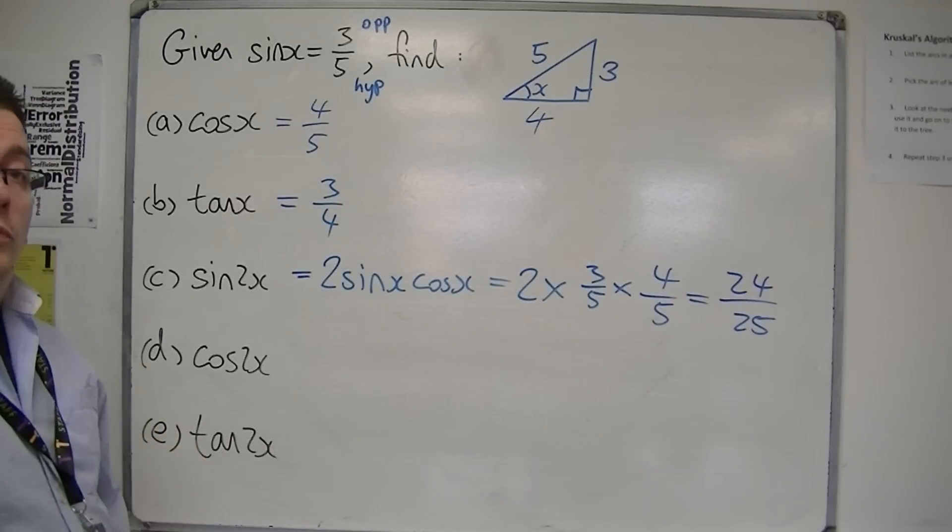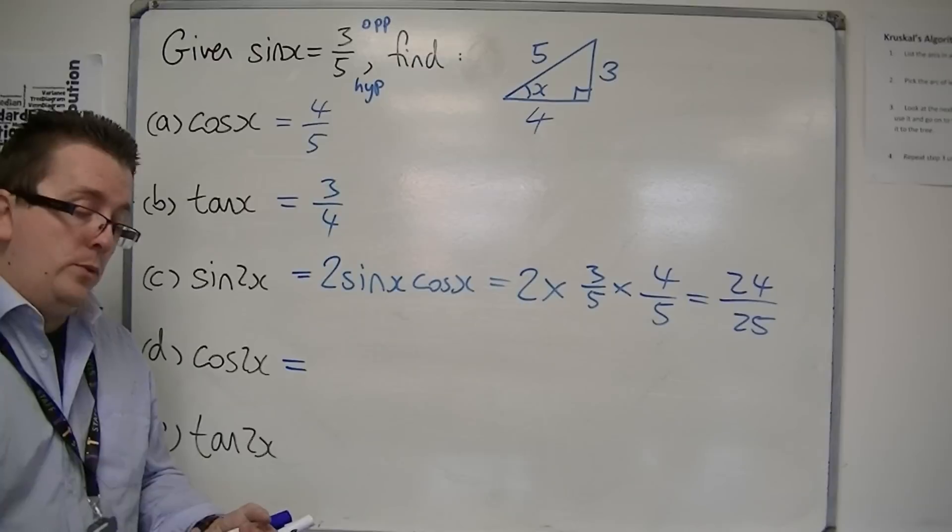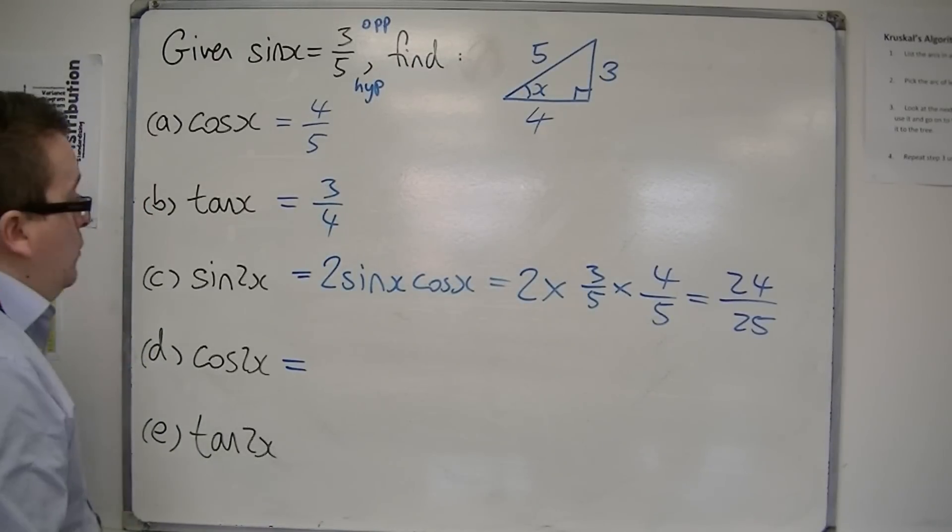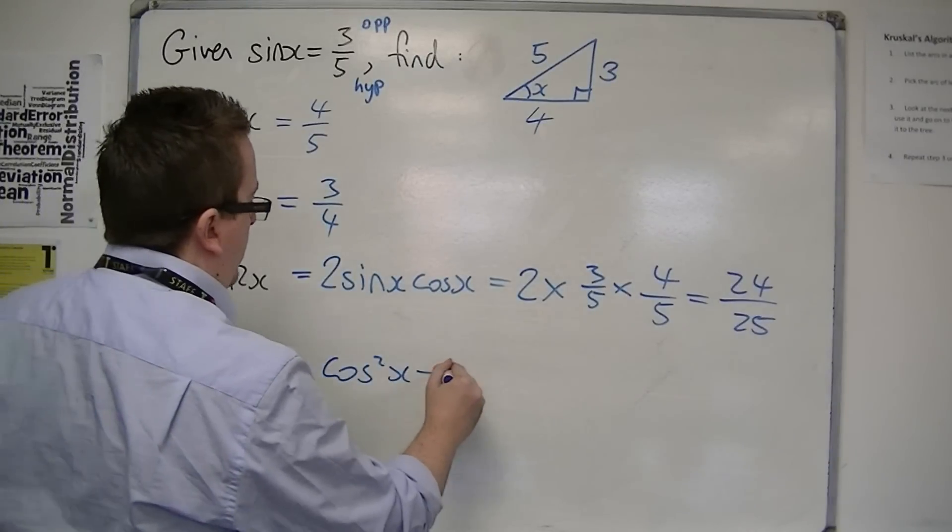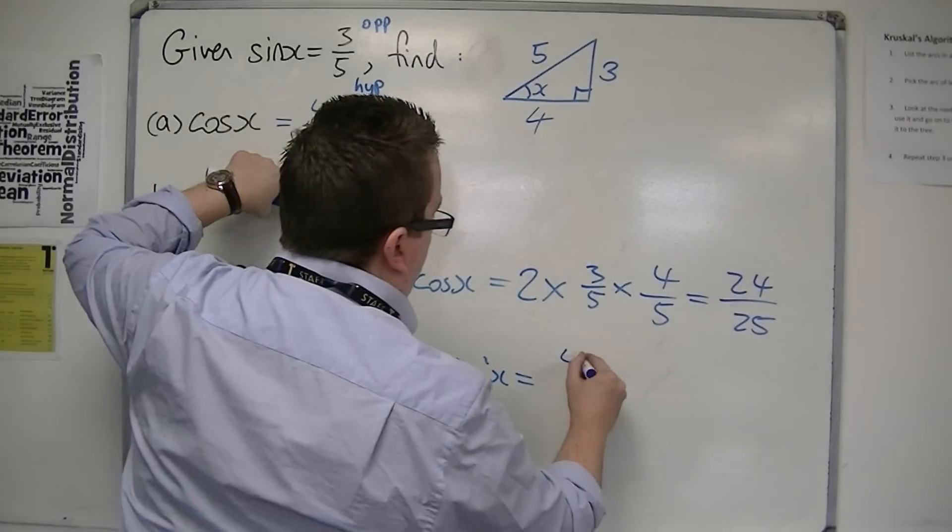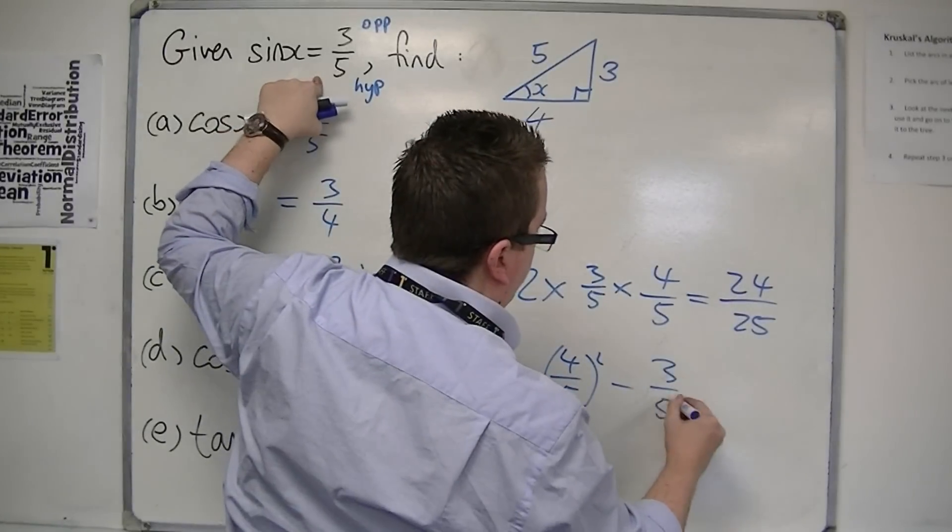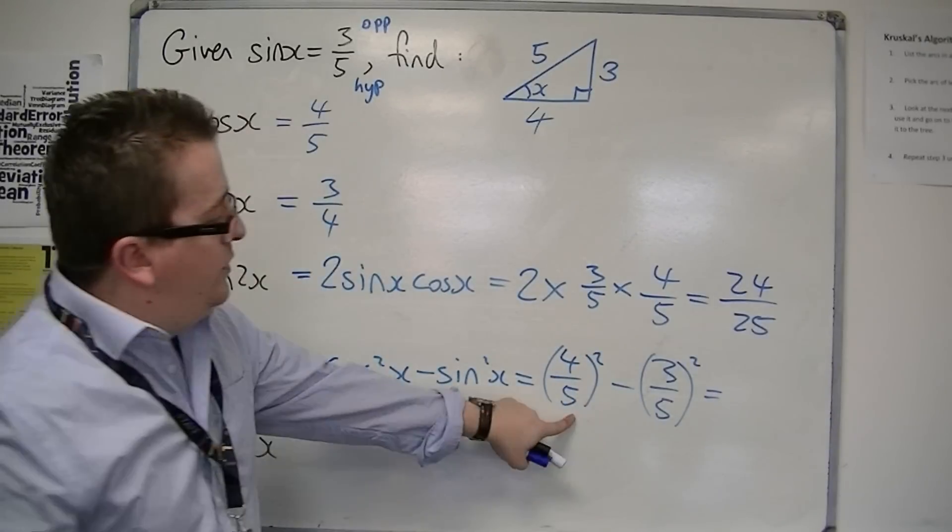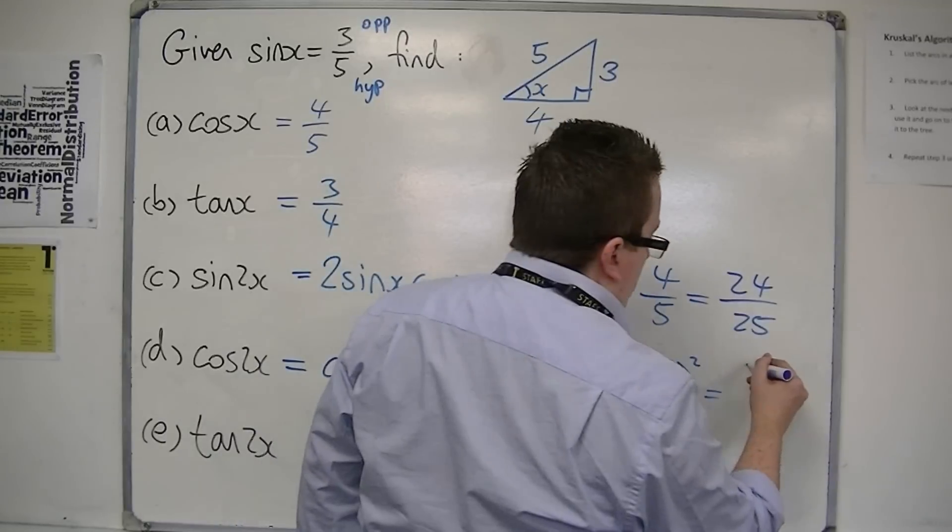For cos 2x, we can use one of the other formulas. We could use cos squared minus sin squared, or 1 minus 2 sin squared, or 2 cos squared minus 1, whichever you prefer. I'm going to use cos squared minus sin squared, so that's (4/5)² take away (3/5)². That's 16/25 take away 9/25, so that is 7/25.